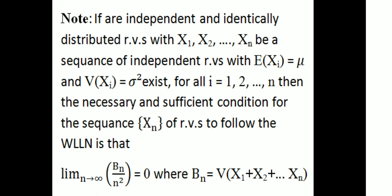A further property: if X1, X2, ..., Xn are independent and identically distributed random variables with E(Xi) = mu and variance of Xi = sigma squared for all i = 1, 2, 3, etc., then the necessary and sufficient condition for the sequence Xn of random variables to follow the Weak Law of Large Numbers is that the limit as N tends to infinity of Bn/N squared equals 0, where Bn equals variance of (X1 + X2 + ... + Xn).